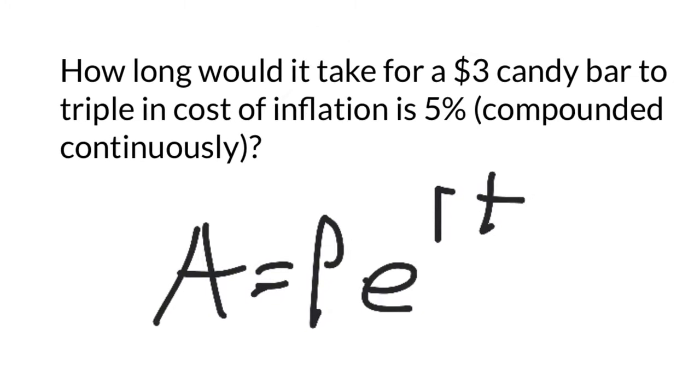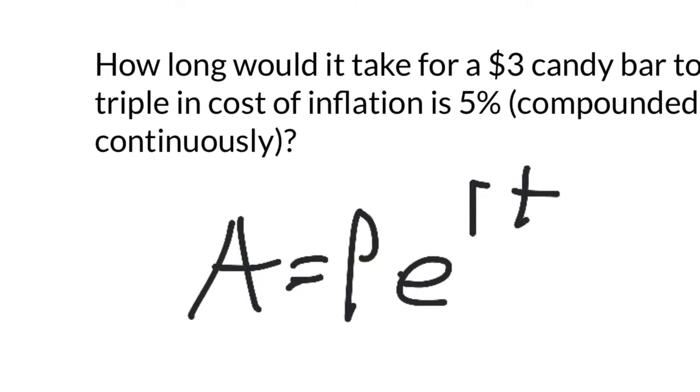So let's plug the information that we're given into the formula. We start with a $3 candy bar. That's our principal, and we want it to triple, so we want it to equal $9.